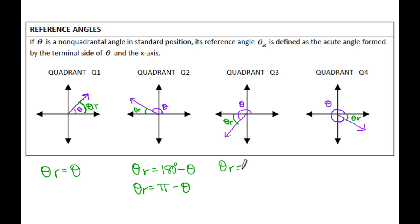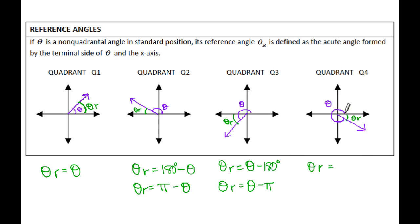If you're in the third quadrant and trying to find the wedge, you need to eliminate the two quadrants you've passed, which means subtract 180 degrees from your original angle theta. In radians, you would subtract pi. And in the fourth quadrant, knowing the measure of theta going all the way around, you want to figure out how much is left until 360 degrees: take 360 minus theta. In radians, that would be 2pi minus your original angle theta.